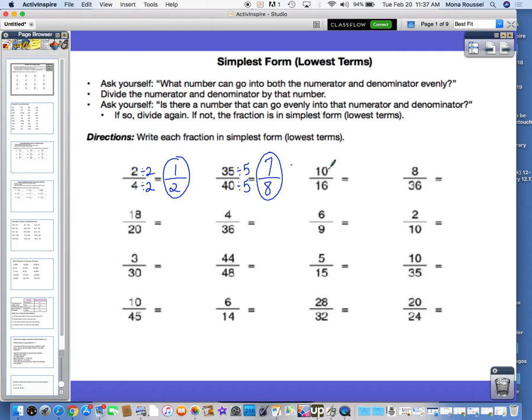When we get to 10 sixteenths, we think of factors of 10. We know 1 times 10 is 10, but 10 can't go into 16. We know 2 times 5 is 10. 2 can go into 10, and 2 can go into 16. But 5 can go into 10, but not into 16. So we're going to use 2, because it can go into both 10 and 16. 10 divided by 2 is 5, and 16 divided by 2 is 8.